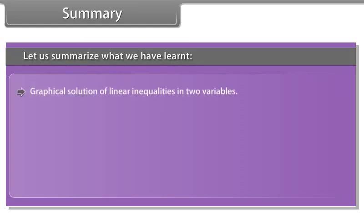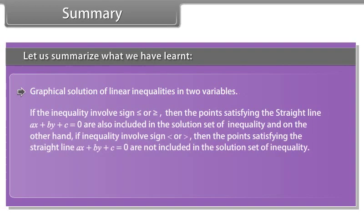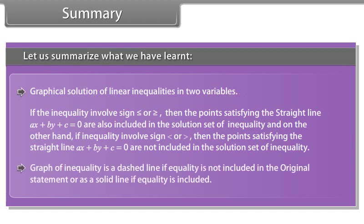Graphical solution of linear inequalities in two variables: If the inequality involves ≤ or ≥, then the points satisfying the line Ax + By + C = 0 are also included in the solution set. The graph of the inequality is a dashed line if equality is not included in the original statement, or a solid line if equality is included.